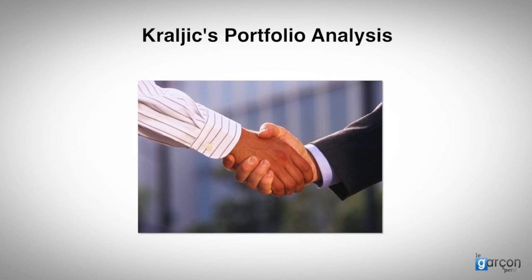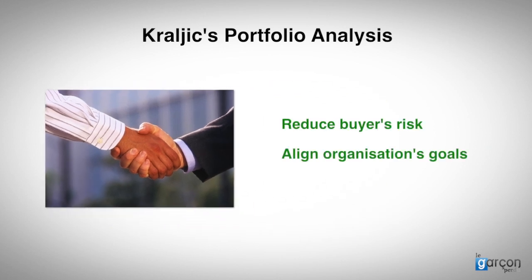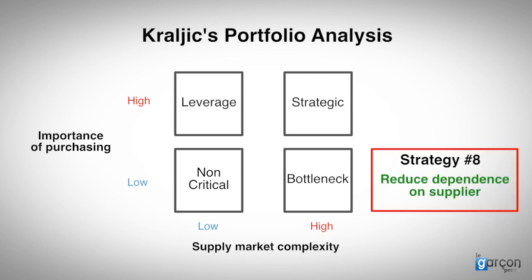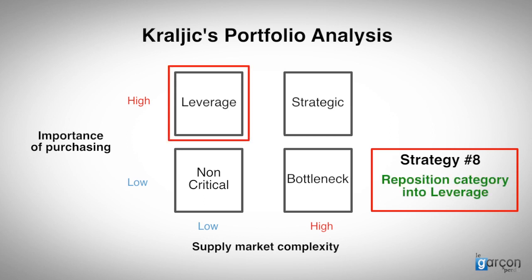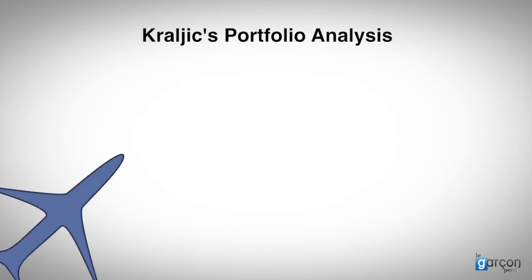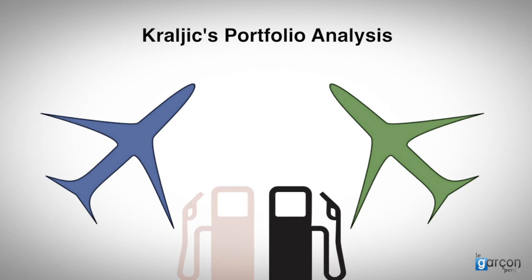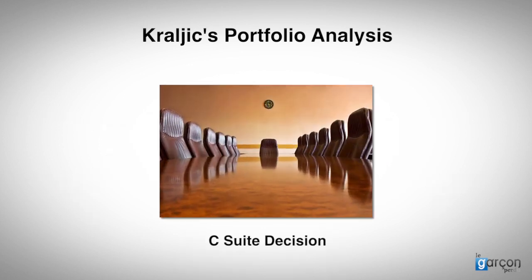Longer-term relationships and cooperative behaviours are designed to reduce the buyer's risk and align the two organisations' goals. This may not work, as typically the supplier may have more scale than the buyer. If the cooperative approach does not work, then strategy 8 involves reducing dependence on the supplier and repositioning the category into the leverage quadrant. Strategies to do this might include sponsoring a new entrant into the market, or changing the specification to open up competition to other suppliers. I recall two airlines faced with a monopoly aviation fuel supplier at one airfield. Both airlines decided to invite another supplier to enter the market in return for a guaranteed share of their total business for a number of years. After that period, both airlines would act independently and ensure that competition was sustained. That sort of decision cannot be taken in the procurement department alone.